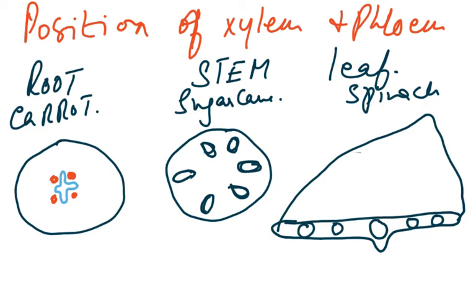The next point of the syllabus is the position of the xylem and phloem in transverse sections of unthickened, herbaceous, dicotyledonous roots, stems, and leaf. Whenever you think of a root, think of a carrot. If you look at a carrot lengthwise, there is a white portion inside — that white portion is actually the xylem, and it is not very nice to taste. If you make gajar ka halwa, you always remove that white portion. So xylem is in the center like a cross, and the phloem is on the sides.